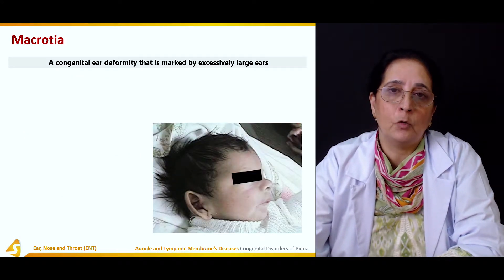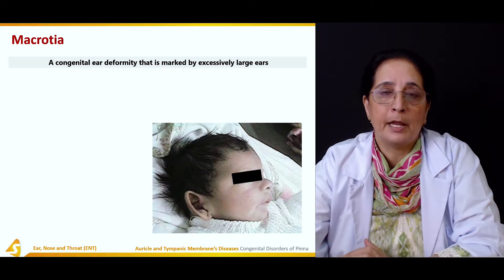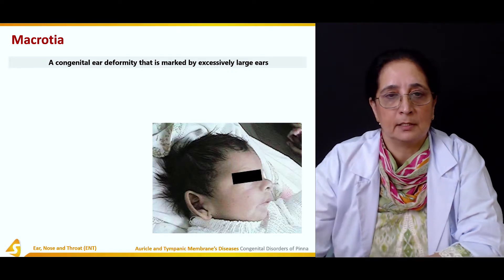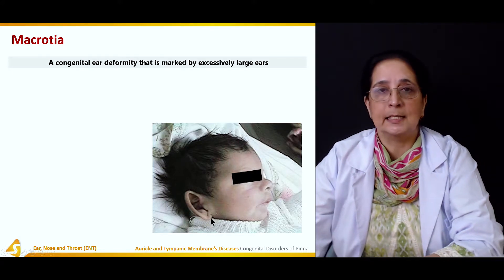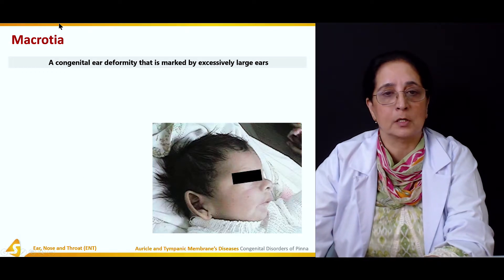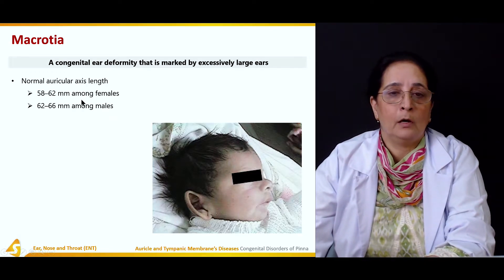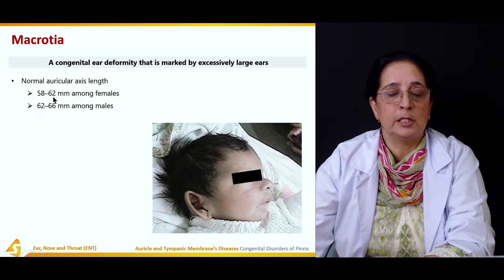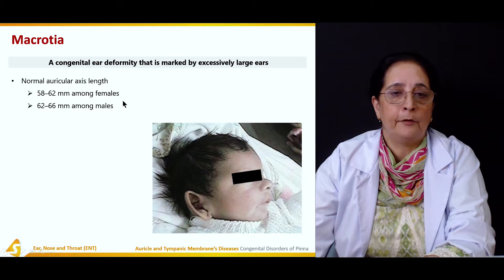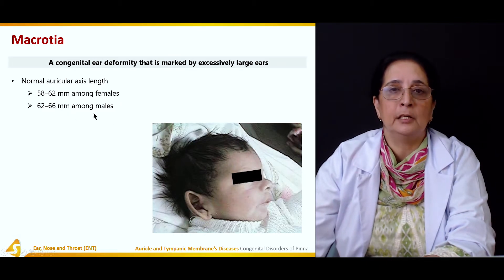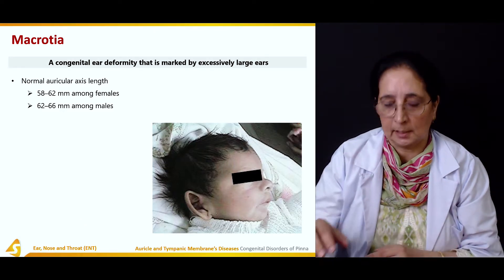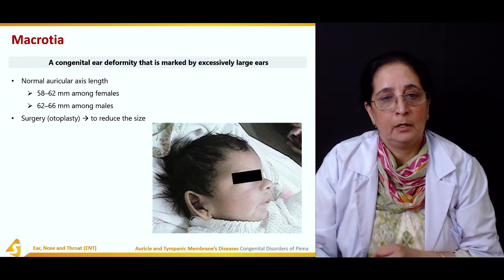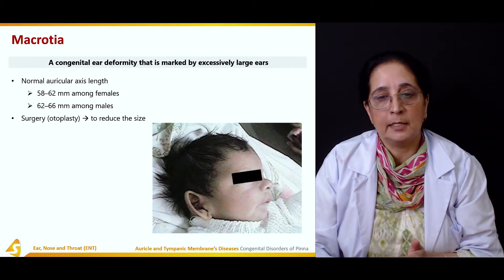Macrotia — 'macro' means large, so macrotia is an excessively large ear present at birth. The normal auricular axis is 58 to 62 mm in females and 62 to 66 mm in males; anything larger than that is labeled macrotia. Surgery — otoplasty — is performed to reduce the size of the ear.